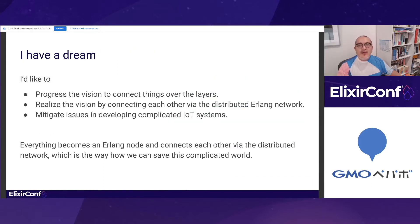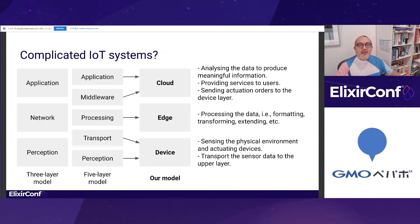I'd like to progress that vision. What we need to do is to connect things with a distributed Erlang network, and it can mitigate current issues in developing complicated IoT systems. I have a dream that everything is connected as an Erlang node. Nowadays, IoT systems take advantage of edge computing and consist of three layers: device layer, edge layer, and cloud layer. This diagram summarizes the architectural models, and these facts bring us complexity in developing such systems.